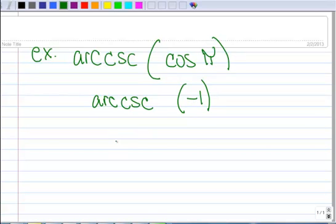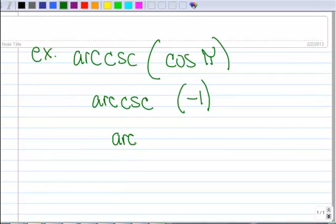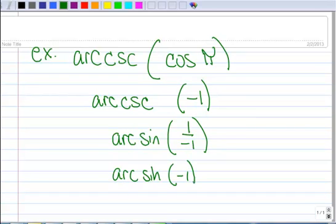And then I can change that part into inverse or arc sine of 1 over negative 1. And of course, 1 over negative 1 is negative 1. So I have arc sine of negative 1. And where is the sine negative 1? At negative pi over 2. Not 3 pi over 2. You have to use restricted domains.